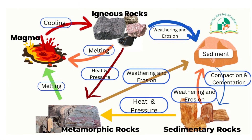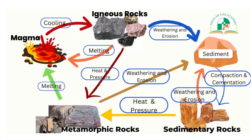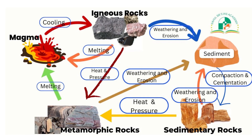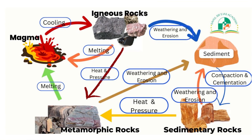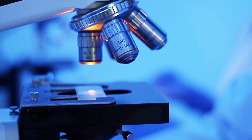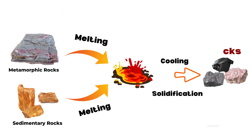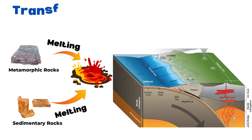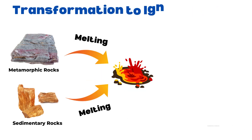Rocks are always in the process of transformation. Weathering and erosion of igneous rocks lead to the formation of sedimentary rocks, and both igneous and sedimentary rocks are transformed into metamorphic rocks. Again, metamorphic rocks can melt under high temperature to become igneous rocks, and the cycle goes on. Let us understand this cycle in a little detail. We will start with the transformation of igneous rocks. When sedimentary or metamorphic rocks are pushed deep under the earth's surface by the action of plate boundary interactions that result in subduction, they may melt into magma.